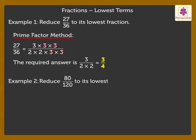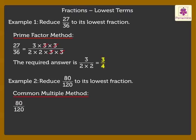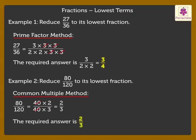Example 2: Here, we can find the common multiple, so let us use the common multiple method. Therefore, 80 upon 120 can be written as 40 into 2 upon 40 into 3. On canceling the common factor that is 40, we are left with 2 upon 3. Thus, we get the lowest fraction as 2 upon 3.